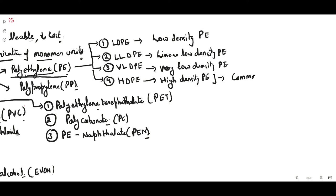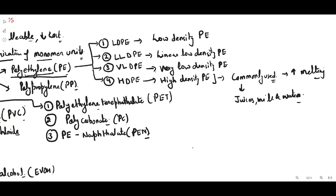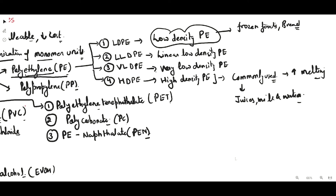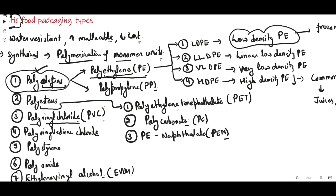HDPE is the most commonly used for food packaging because it has a higher melting point, and it is used in the packaging of juices, milk, and water. Low density polyethylene is commonly used for the packaging of frozen foods or in bread packaging. Polyolefins are the most common plastics used for food packaging, with low density and high density polyethylene selected according to their flexibility and durability needs.